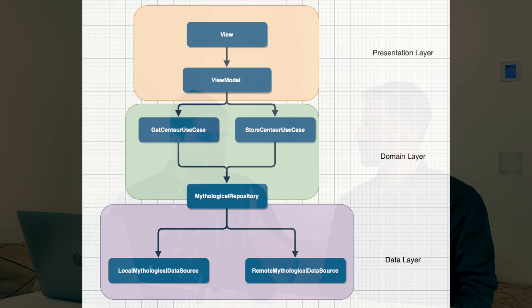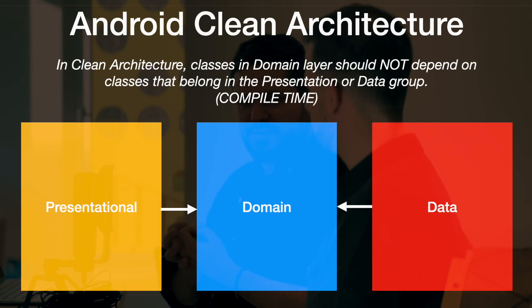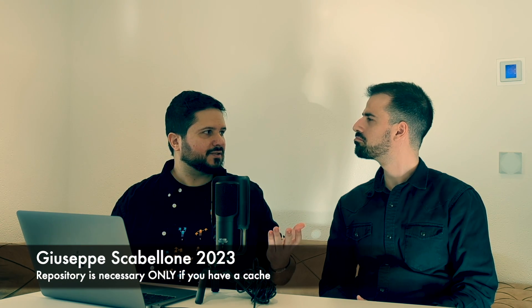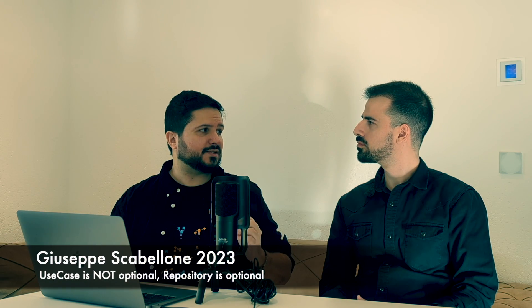You'd create another view model for a detail screen — like the detail of your centaurus — that calls a repository, and all the logic piles up. Google this year decided to put use cases, though they're still somewhat against them — they put them as optional, with an optional domain layer. You're not forced to use it, so they are fading a bit toward the real clean architecture. The use case should have the logic, because the business logic should live in the domain — the core of clean architecture.